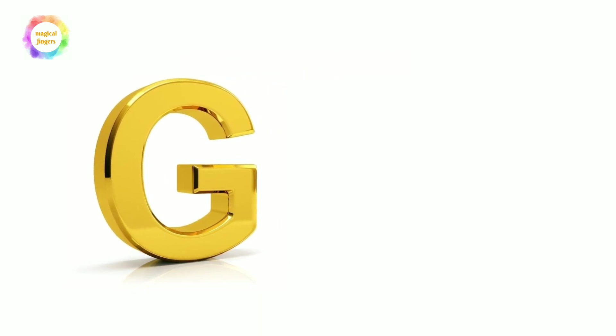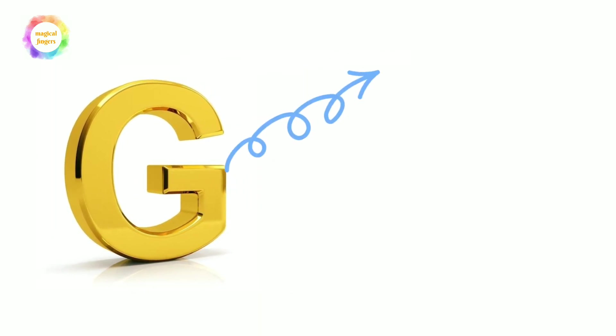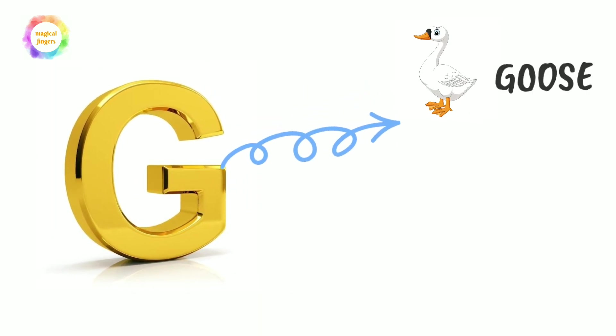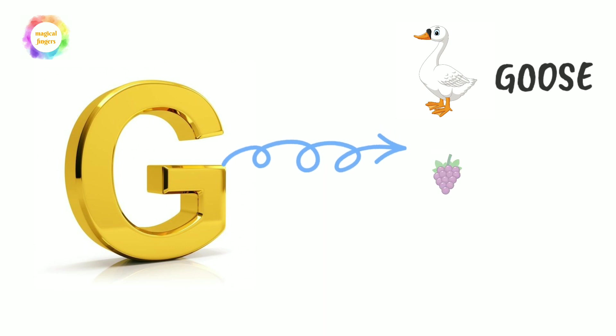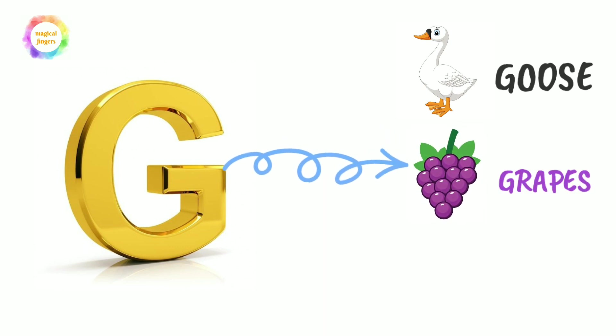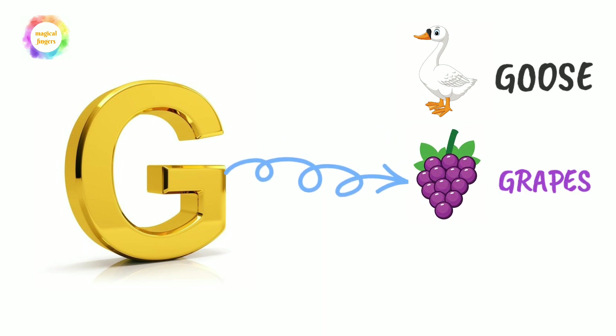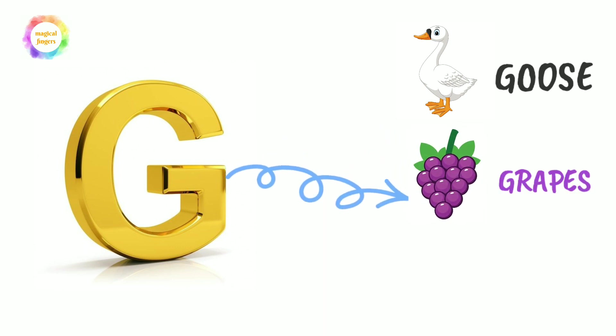G is for goose, G-O-O-S-E. G is for grapes, G-R-A-P-E-S.